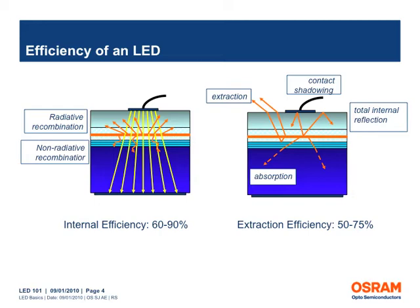Some of the light is lost within the semiconductor material due to effects such as total internal reflection, absorption and shadowing of contacts, resulting in only a certain portion of the light exiting the package. This is the extraction efficiency of the LED. To improve the overall efficiency of the LED package, it is important to improve both the internal and the extraction efficiency.